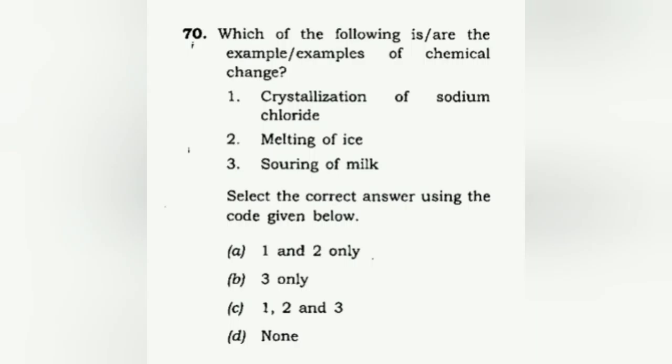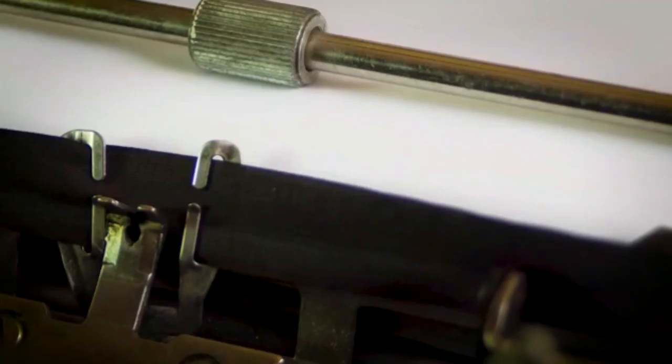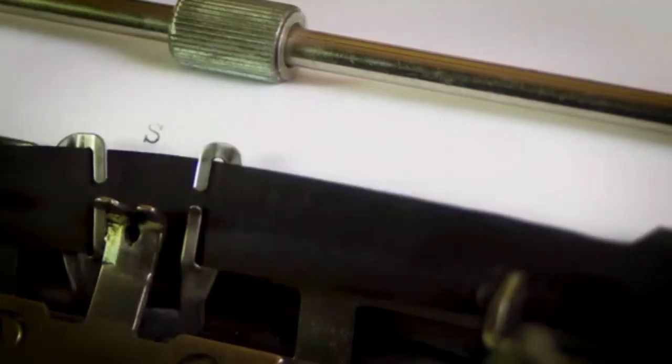The last question: which of the following is an example of a chemical change? This is a very easy question from the NCERT — proof that UPSC does refer to NCERTs. Crystallization of sodium chloride — no, that's a physical change. Melting of ice — no, physical change. Souring of milk — yes, this is a chemical change because it involves fermentation. The correct answer is 3 only.